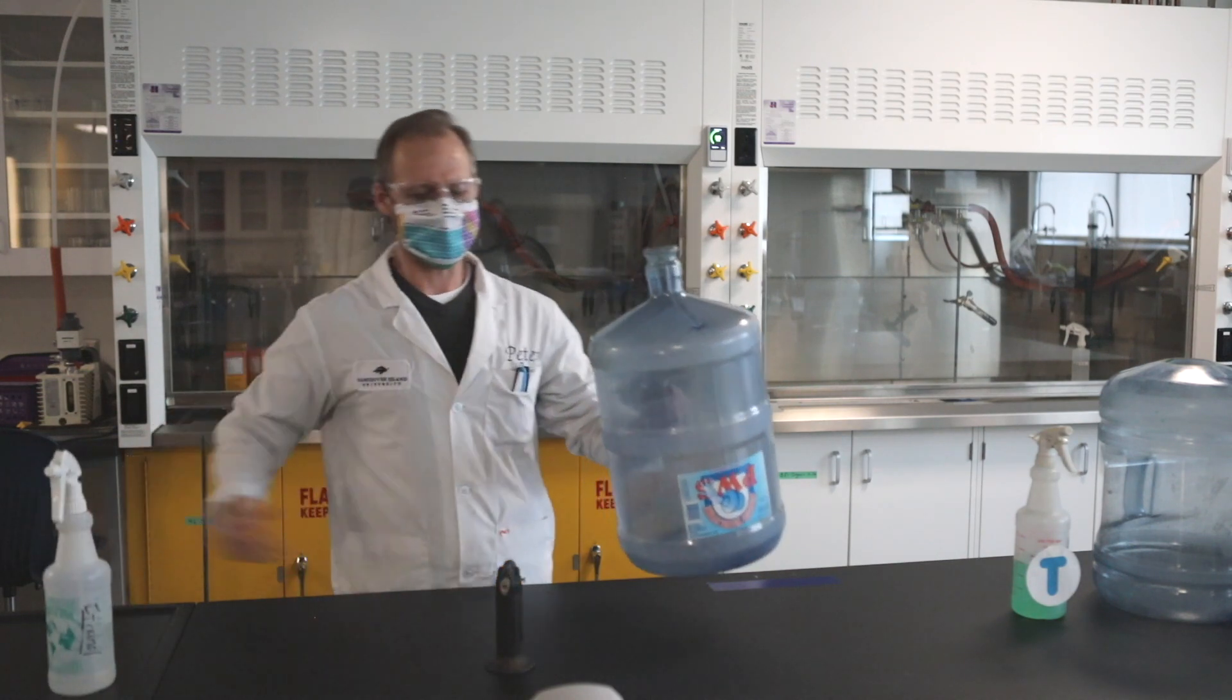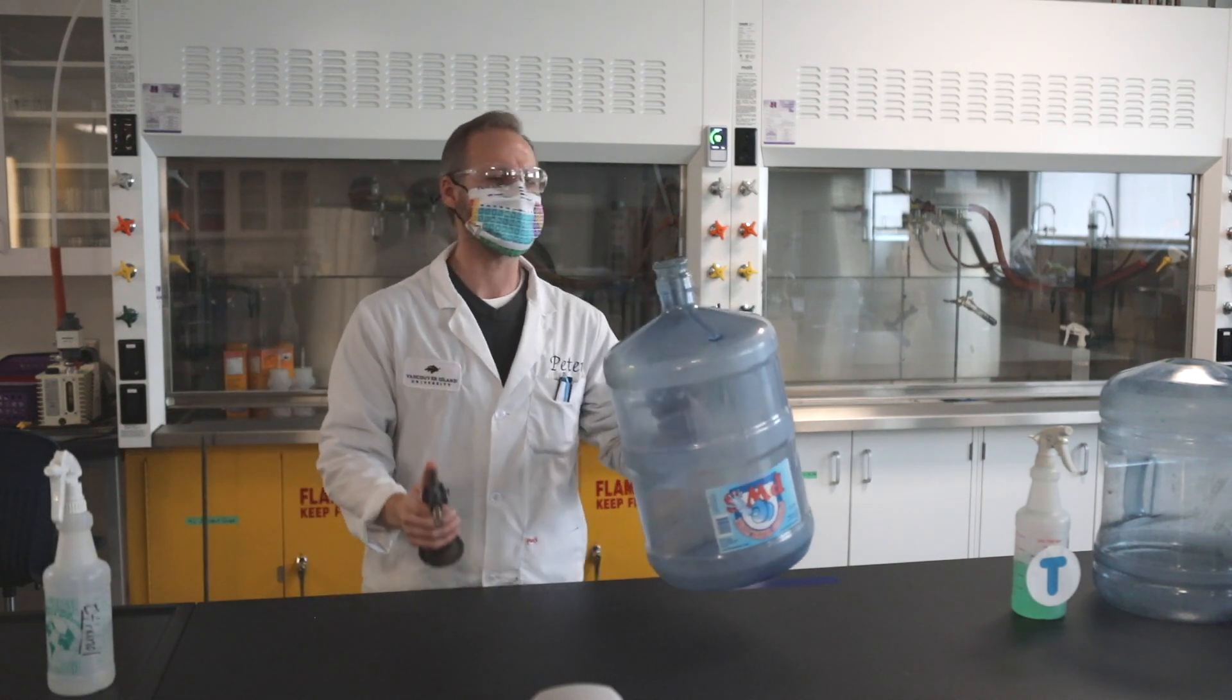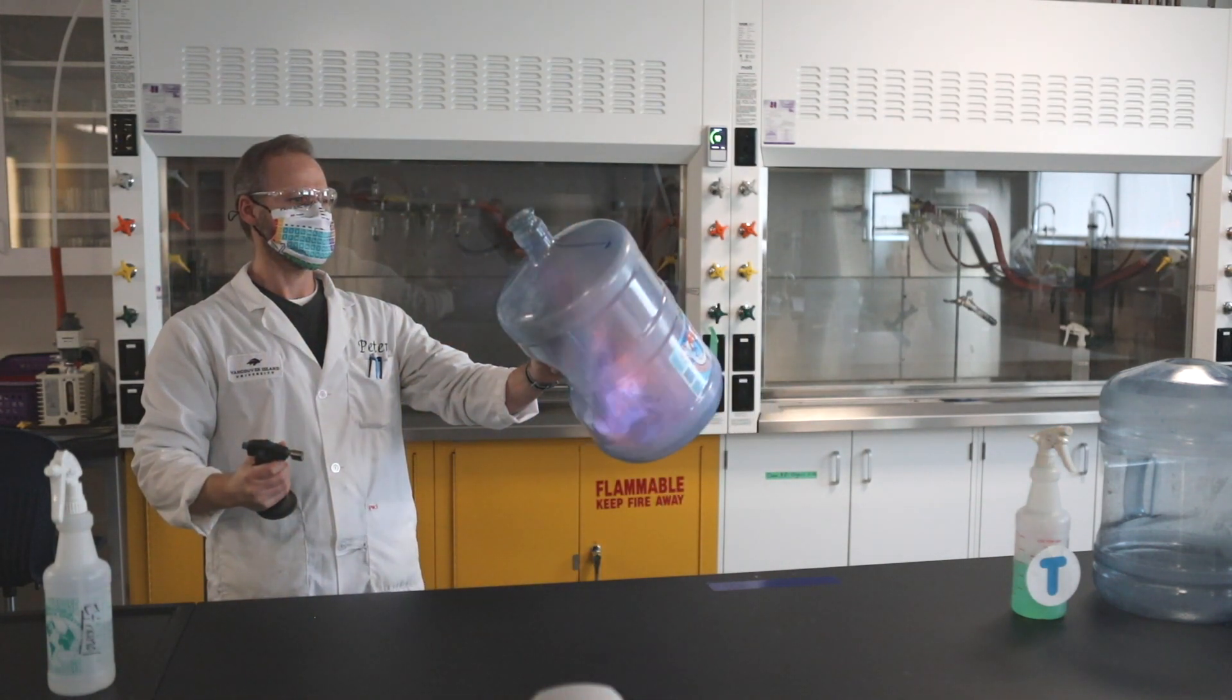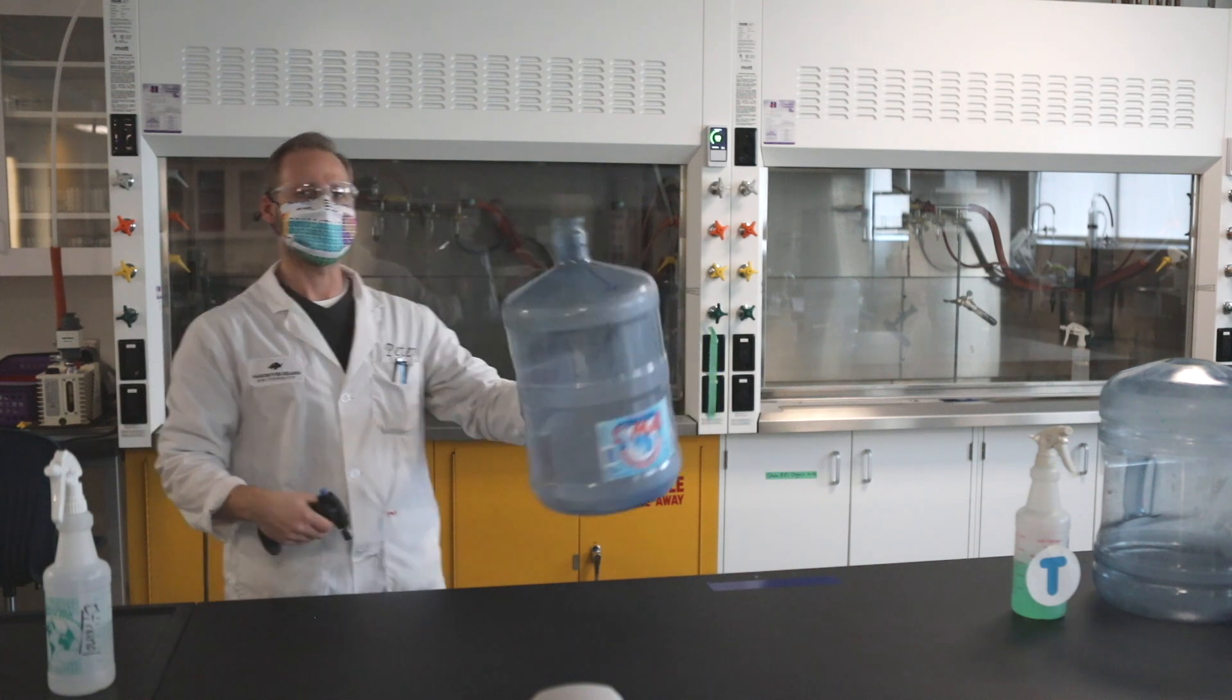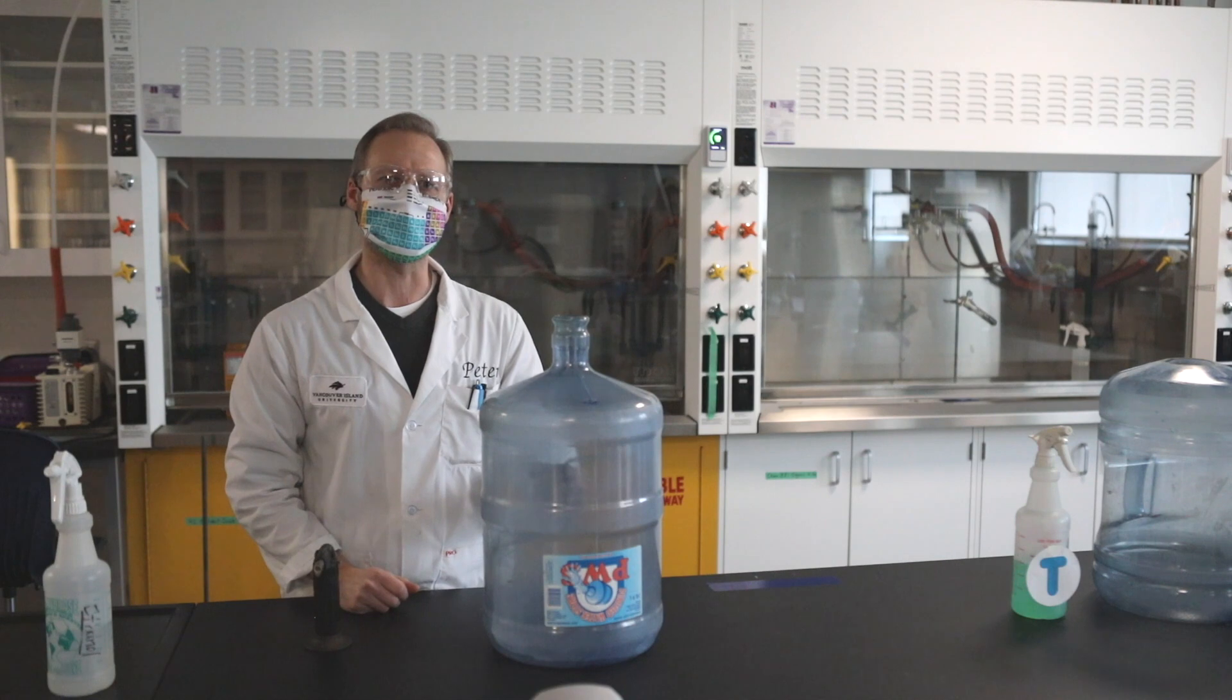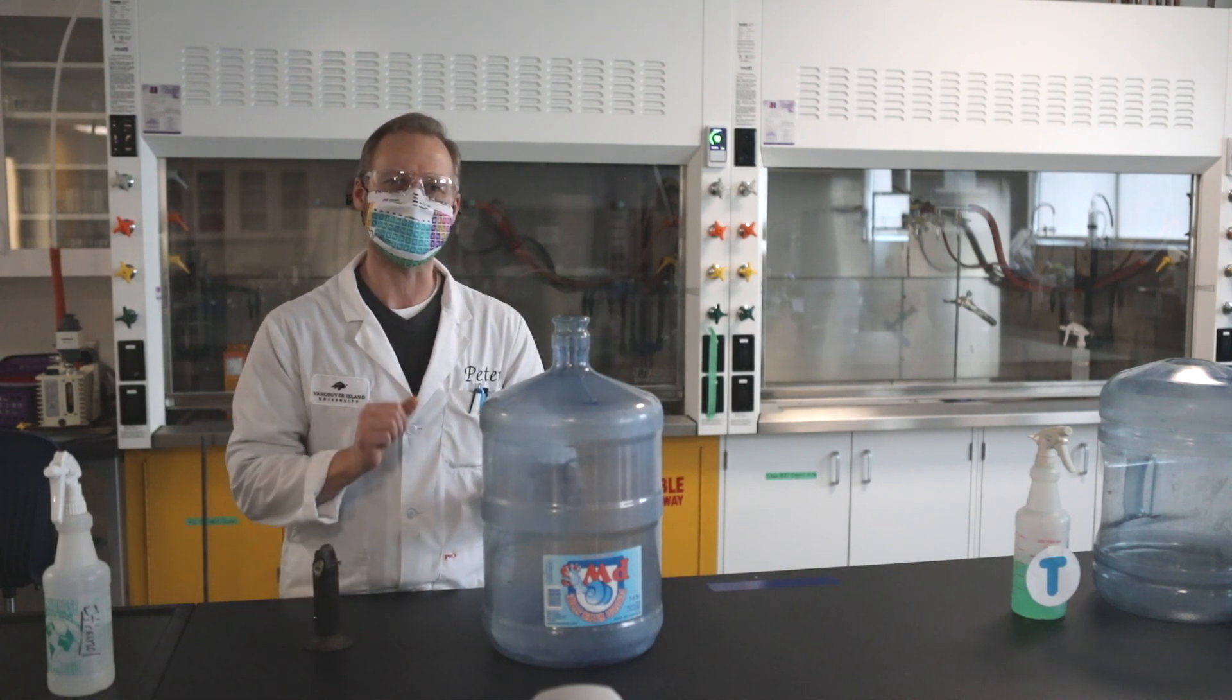Alright, let's light this thing up and we're going to see what the color gives. Just ethanol on its own. Alright, so that's ethanol. Now what we're going to do is we're going to go to the next one. We're going to add a bit of metal to it and see what color that gives.